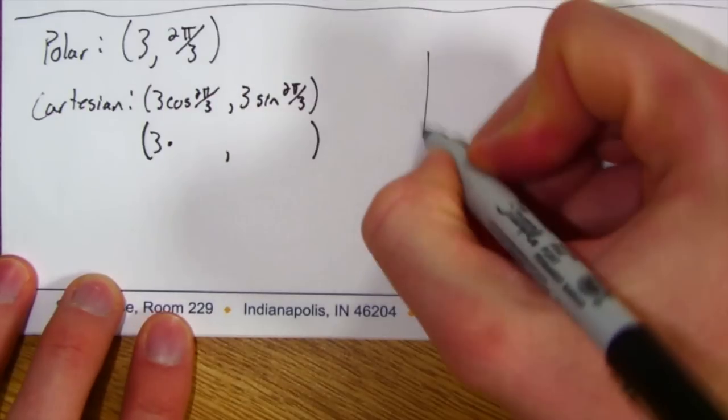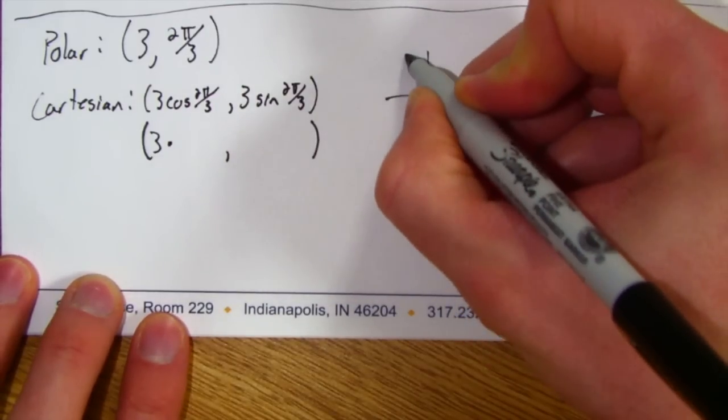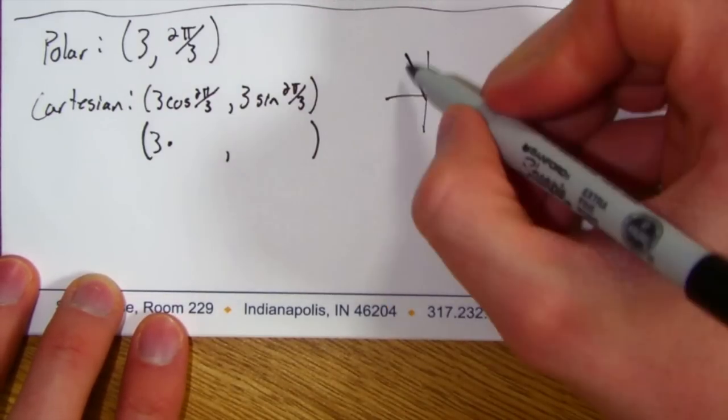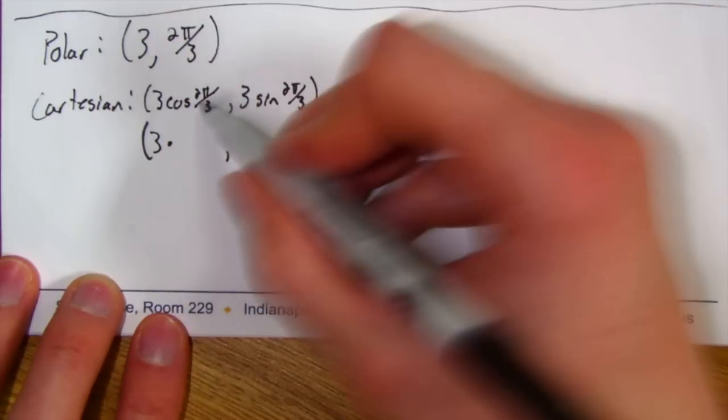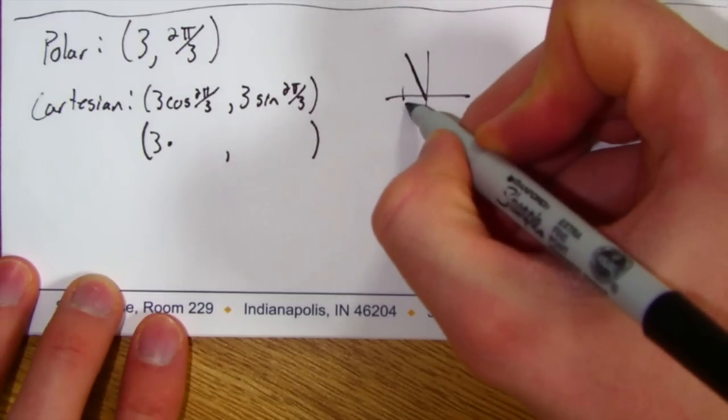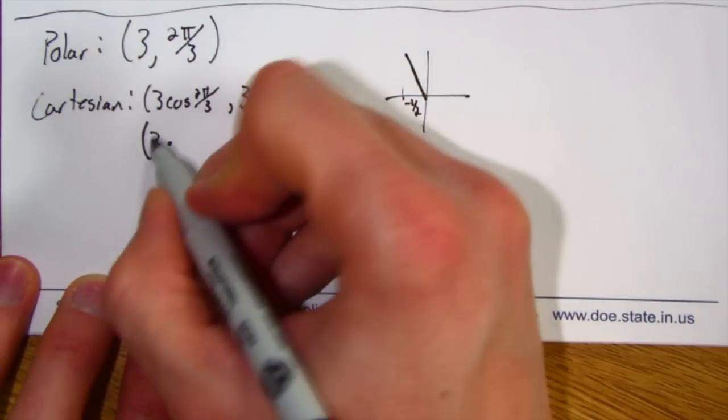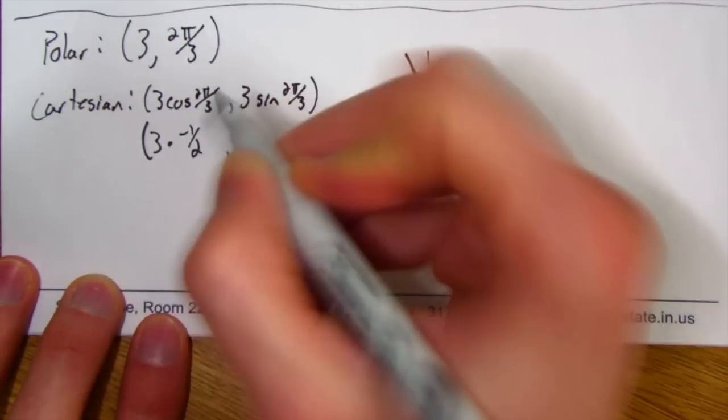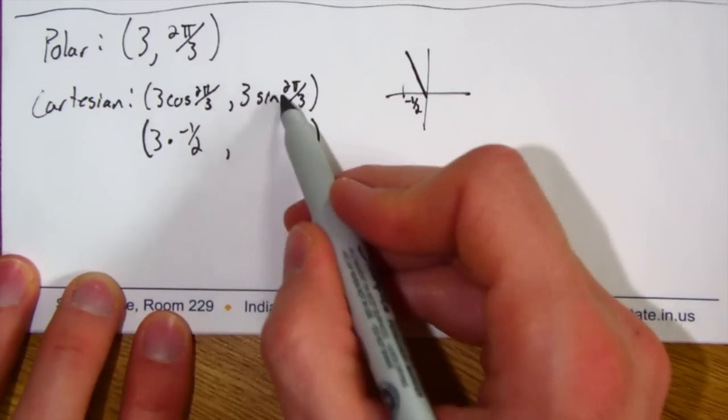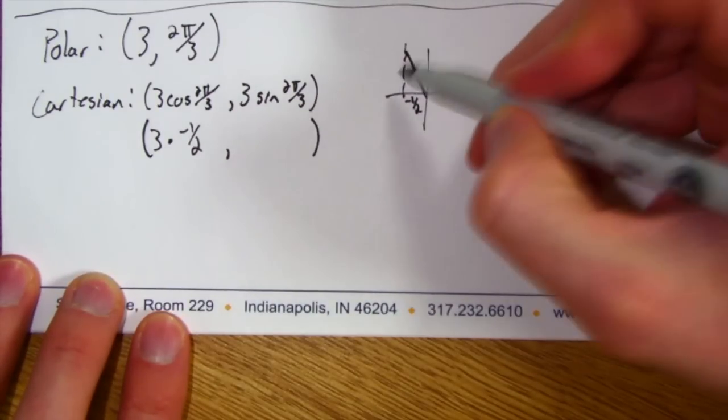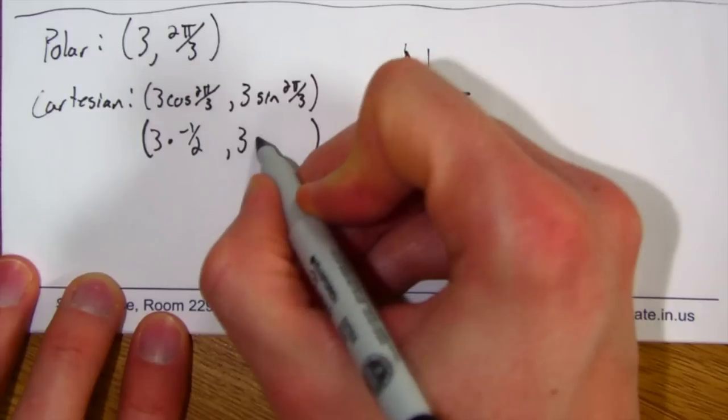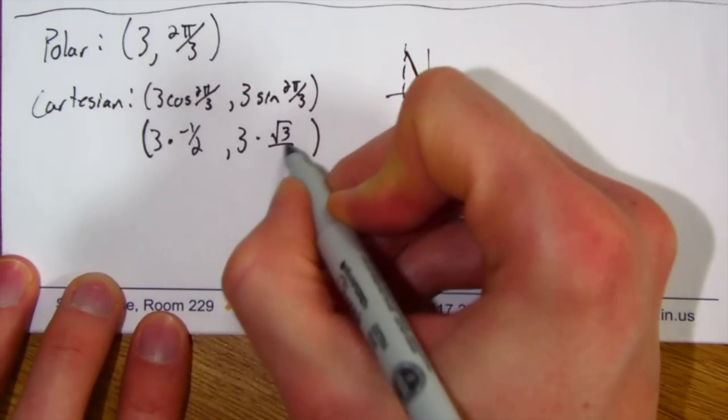So if I were to draw a sketch, it would be over here. And if you remember, the cosine of that would be negative 1 half. So this would be 3 times negative 1 half. Sine of 2π over 3 is the y value, which is √3 over 2. So this is 3 times √3 over 2.